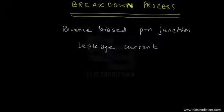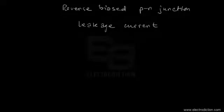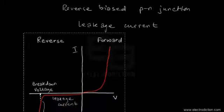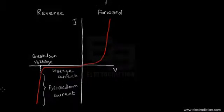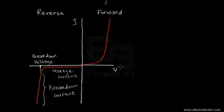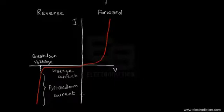Here we have a graph of the diode in order to portray this phenomena. This picture clearly represents diode characteristics, which you'll have already come across in the previous tutorials on PN junction diodes. You can see the current plotted on the y-axis and the voltage applied across the PN junction diode on the x-axis. To the right of the current axis we have the forward characteristics, and to the left we have the reverse characteristics.